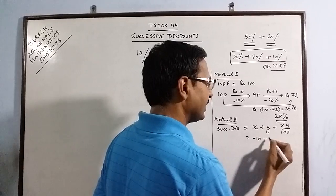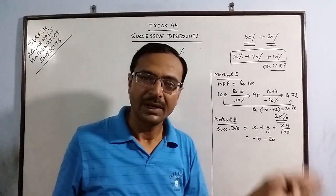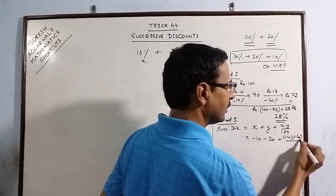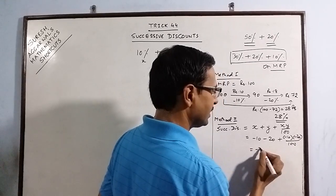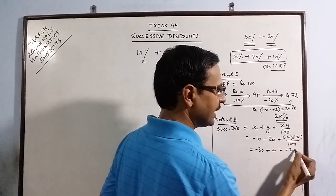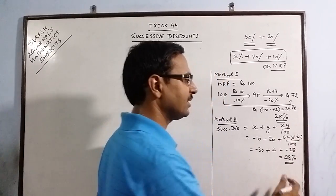So minus 10, minus 20. x is 10 and y is 20, but I am taking them as negative, plus minus 10 into minus 20 upon 100. So this is minus 30 plus 200 upon 100, so minus 28. So discount is 28%. This is the second method.